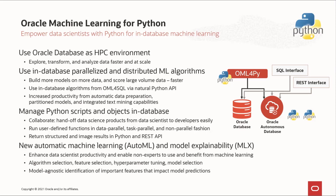Results from these user-defined functions can contain both structured and image results and be accessed from Python and REST APIs. OML for Python also supports automatic machine learning, or AutoML, which not only enhances data scientists' productivity, but also enables non-experts to use and benefit from machine learning. AutoML can help produce more accurate models faster through automatic algorithm and feature selection and model tuning and selection. In addition, model explainability, or MLX, provides model-agnostic identification of important features impacting model predictions. AutoML and MLX are core technologies developed by Oracle Labs.